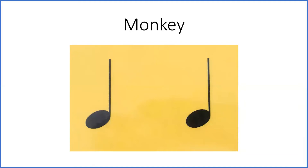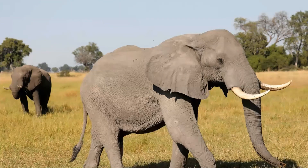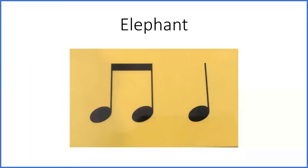I'm going to show you another picture. What do you see? Elephant! Let's try clapping for every part of the word elephant. Listen — Elephant. Let's try it together. Elephant. This is what that rhythm looks like. Elephant.